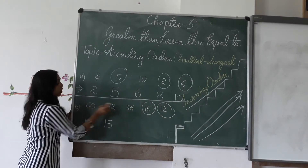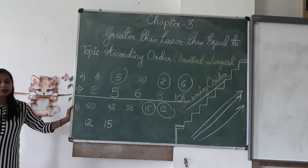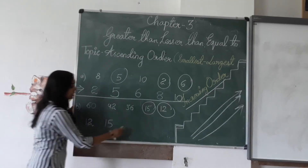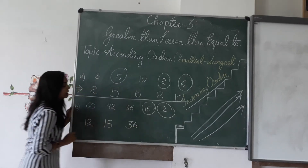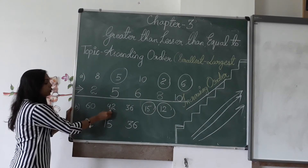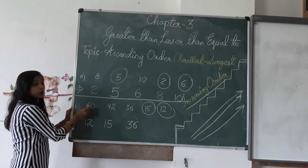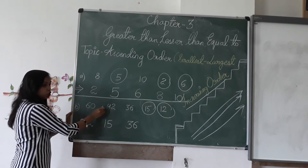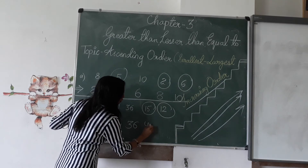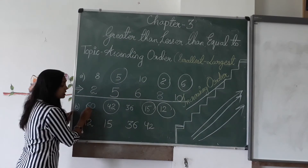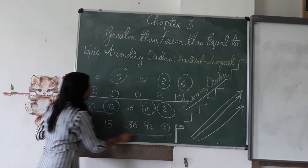Now try to find the smallest number in the remaining ones. Thirty-six is the smallest — good. Now the ones left are forty-two and sixty. The smallest between these two is forty-two, so forty-two comes next. And the last one is sixty, which is the greatest number.